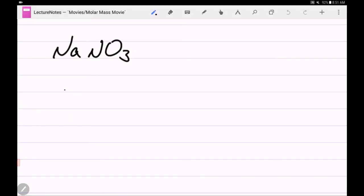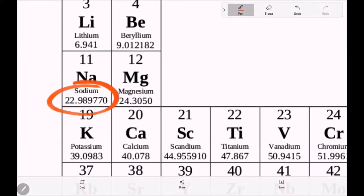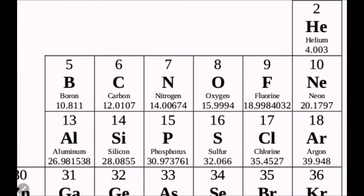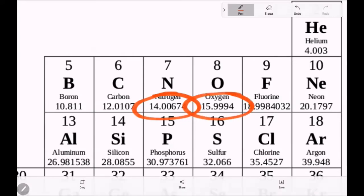We want to total up the number of atoms in this molecule. There's one sodium, there's one nitrogen, and there's three oxygens. Now we need a periodic table. We can see that sodium has a molar mass of 22.99. Nitrogen's got a molar mass of 14.01, and oxygen's got a molar mass of 16.